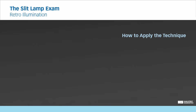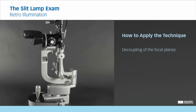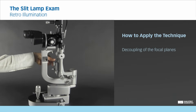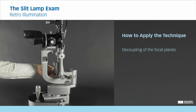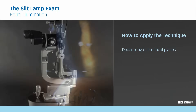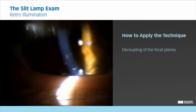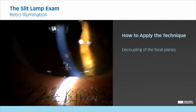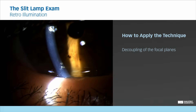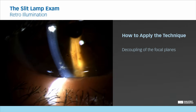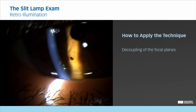Decoupling can be done by loosening the decoupling knob and rotating the illumination tower. For observing with decoupled illumination, start by focusing on the area of interest. Once you are in focus, decouple the slit illumination beam and gradually change the direction until it illuminates the structure behind your area of interest.